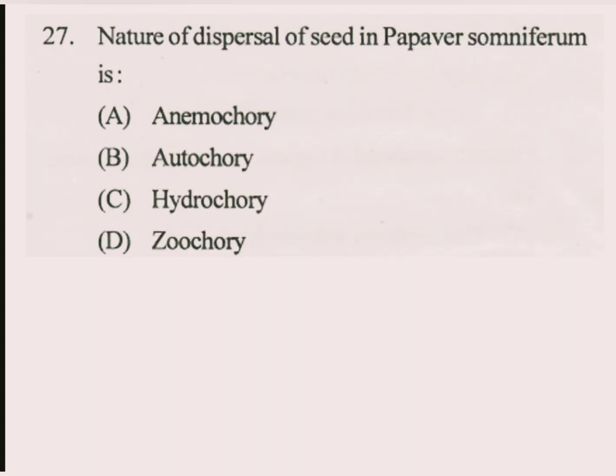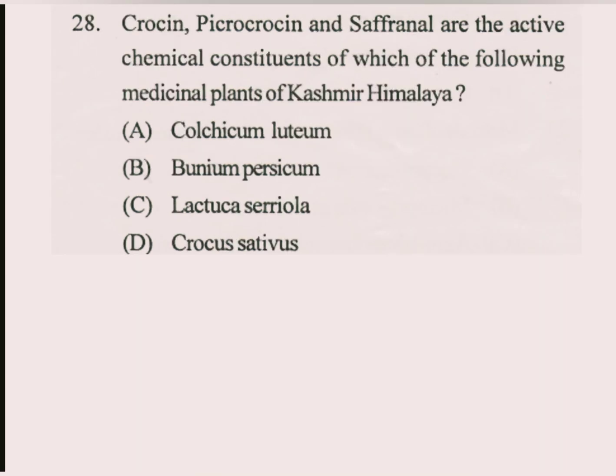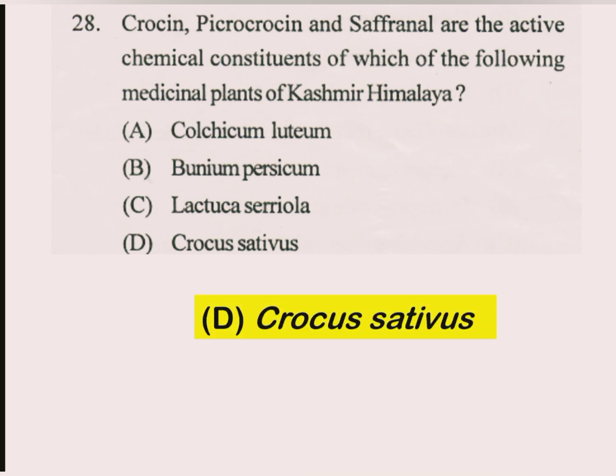Question number 27. Nature of dispersal of seed in Papaver somniferum is? The answer is E part: anemochory. Question number 28. Crocin, picrocrocin and safranal are the active chemical constituents of which of the following medicinal plants of Kashmir Himalaya? The answer is Crocus sativus.